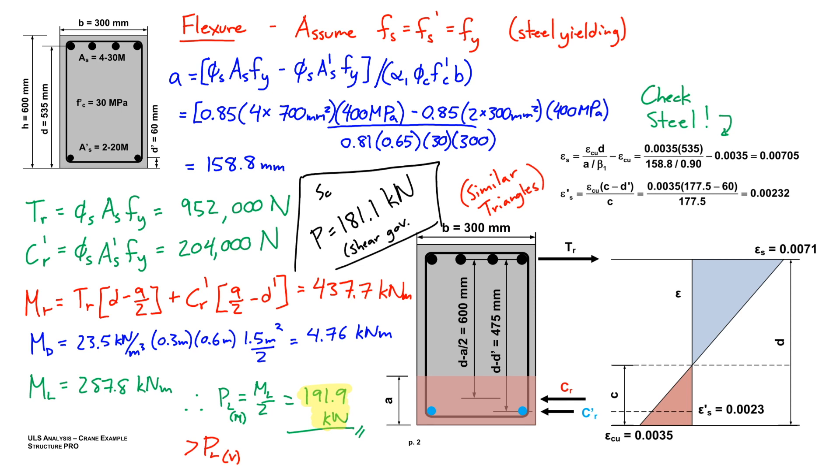Now that is greater than P live for shear, which was 181 kilonewtons, so shear governs this example. The total safe crane load is 181.1 kilonewtons. That's it, thanks for tuning in. See y'all next time.